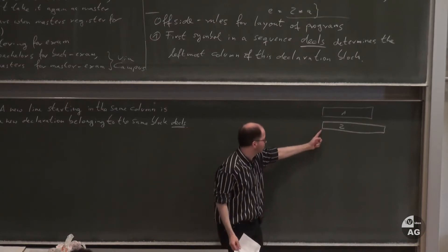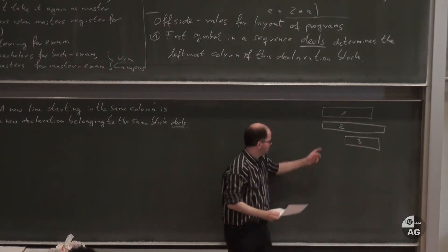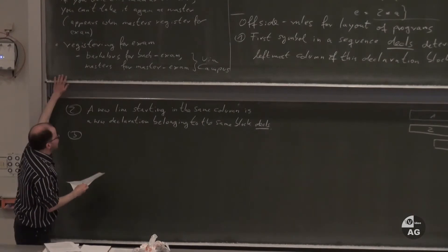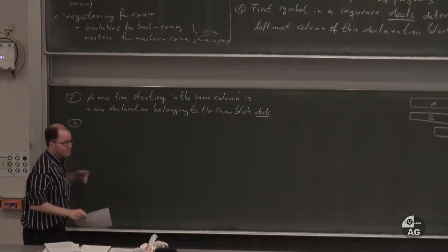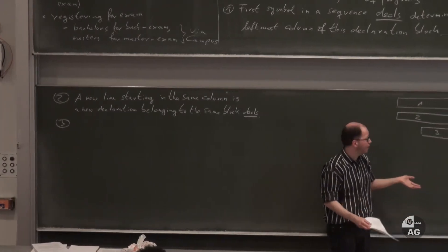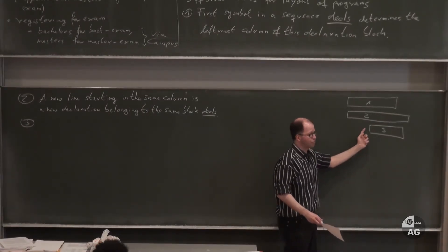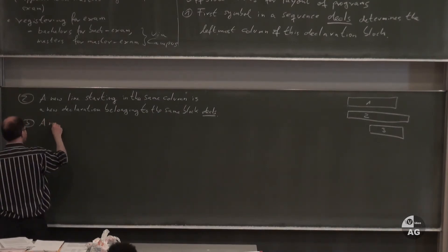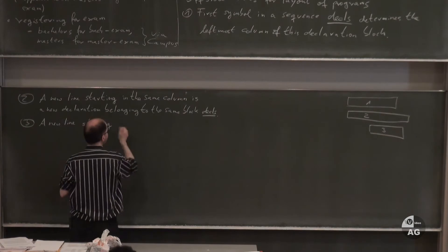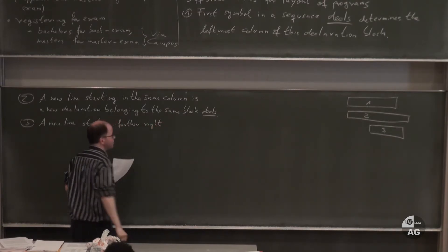If the next line starts further to the right, it is not a new declaration but simply continues the declaration in the line above. This is useful if you have a very long declaration that doesn't fit into a single line — you continue on the next line but must indent it further to the right.